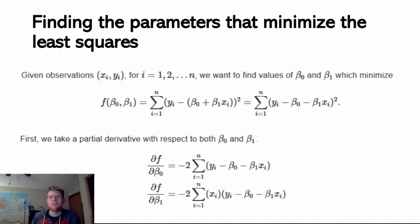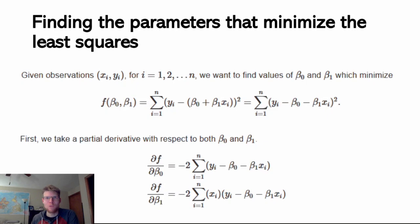To find the beta 0 and beta 1 that minimizes this function to the smallest possible value, I'm going to take the derivative of this function and set that derivative equal to 0 to find a local minimum or maximum. We're not really going to get into how we know it's the local minimum and not the local maximum — there's more derivation that we're not going to worry about. We can just trust that setting this derivative equal to 0 is finding the local minimum in this case.